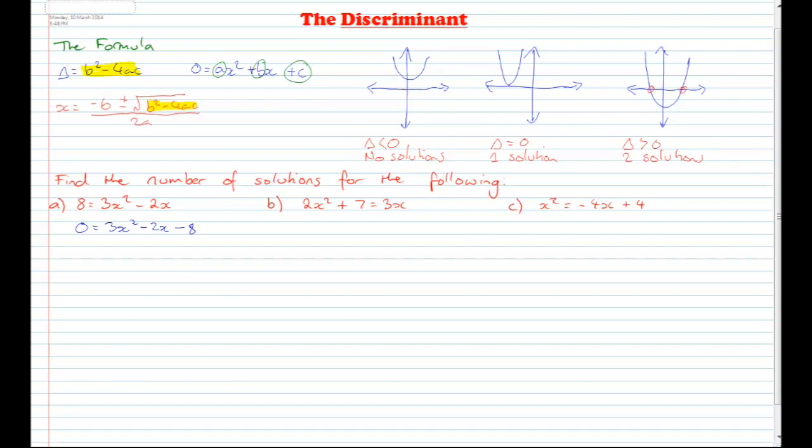So now what we can do is use the discriminant formula to figure out how many solutions there are. Let's go through and figure out our a, b and c values first. We've got our a value is 3, our b value is negative 2, and our c value is negative 8.